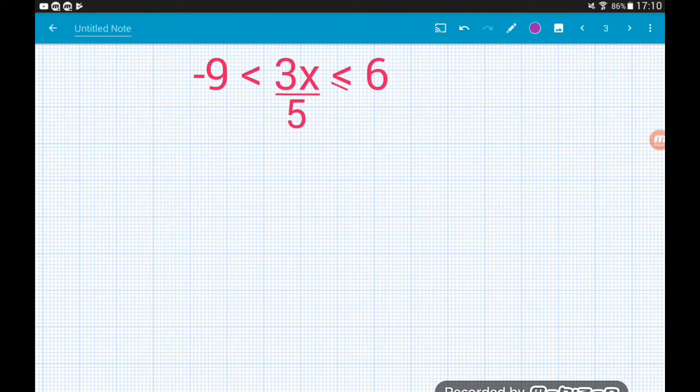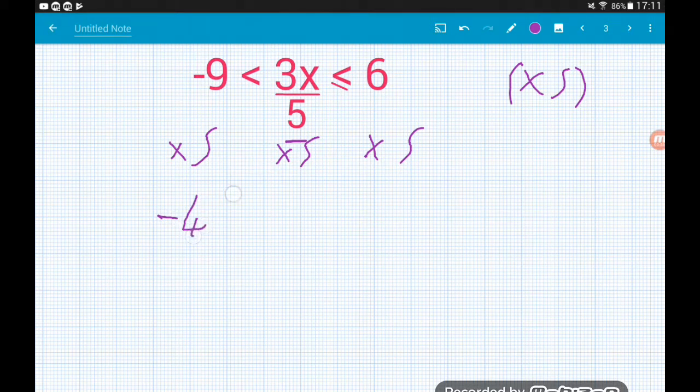So here we've got 3x over 5 is greater than minus 9 but less than or equal to 6. So how are we going to solve that? Well, our first move could be to sort out this 5 on the bottom of the fraction. So remember, that 5 is dividing with 3x. So to cancel our division, we multiply by the numbers. So we're going to times by 5. And again, we do that to all three parts of the inequality.